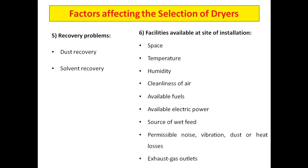Regarding facility available at the site of installation: space is very important — if you have bigger space, you can use a bigger dryer. Check the temperature the dryer can produce at maximum, the humidity at the chamber and room, cleanliness of the air, availability of fuels and electric power, source of wet feed, permissible noise, vibration, dust, heat losses, and exhaust gas outlets — all physical attributes to consider when selecting a dryer.